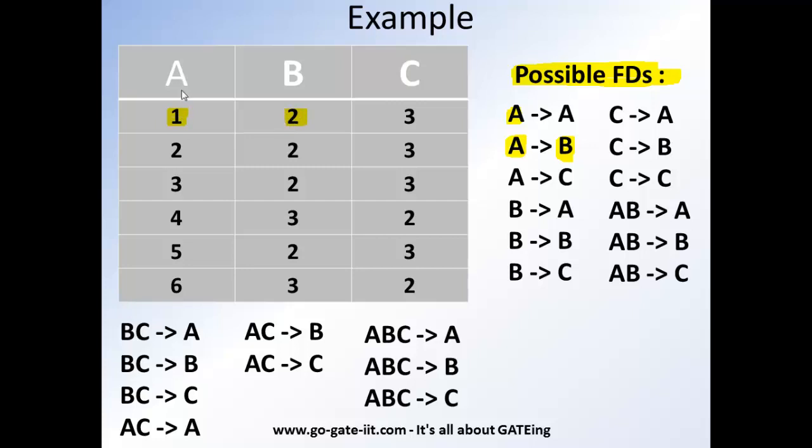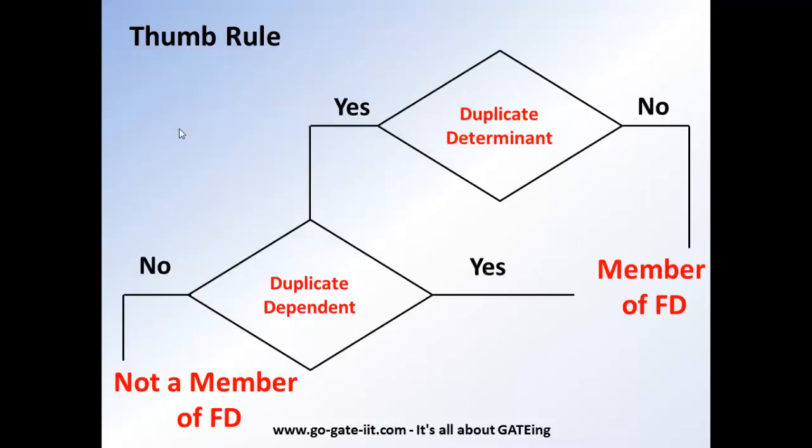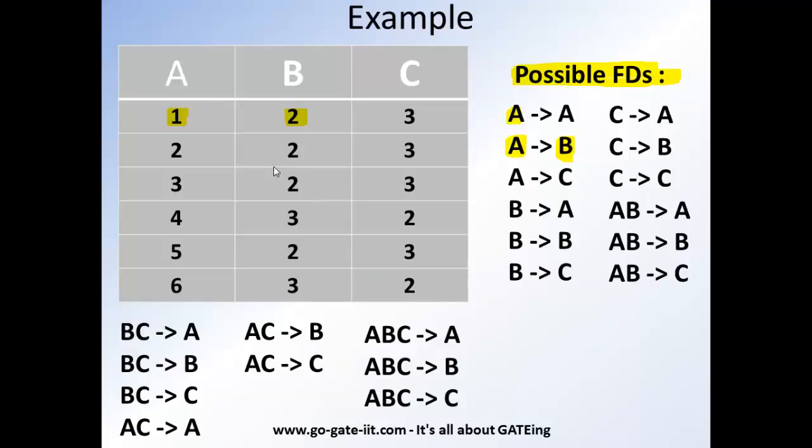We will check for the duplicate entries in the attribute set A. We don't have any duplicate entries that means it flows to the no condition and it goes that member of FD. So here you can see that 1 uniquely identifies 2. 2 uniquely identifies 2.